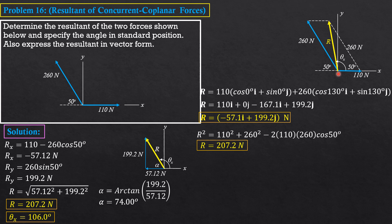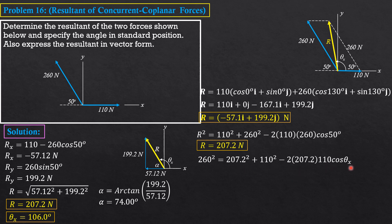I will apply the sine law here only because I am anticipating that the displayed answer in my calculator will not be used directly — it is 180° minus the displayed answer. If you apply sine law without that reasoning, your answer will automatically be 74°. Instead, use the cosine law: 260² = 110² + 207.2² − 2(110)(207.2)cos(theta_x). Solving gives theta_x = 106.0°.